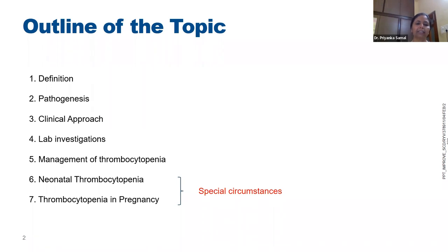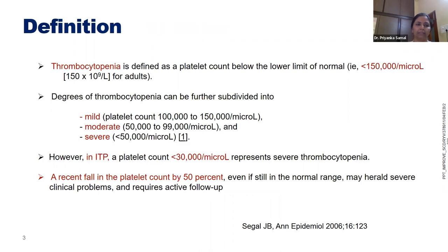Special circumstances include neonatal thrombocytopenia and thrombocytopenia in pregnancy. Thrombocytopenia is defined as a platelet count below the lower limit of normal — less than 1.5 lakhs for adults. The degrees are variable: mild ranges between 1 lakh to 1.5 lakh, which is almost normal for hematologists. Moderate is 50,000 to 1 lakh, and severe is less than 50,000.